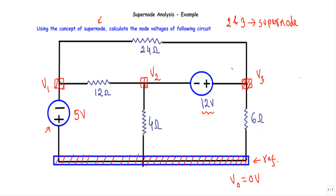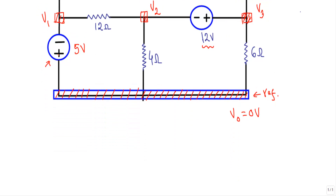Because within node number two and three, we have this independent voltage source of 12 volt connected. Now, the positive terminal of the five volt source is connected at the reference terminal, and the negative terminal is connected at node number one. That means the reference node voltage is higher than node one voltage, so V_ref minus V1 = 5V, giving us V1 = -5 volt.